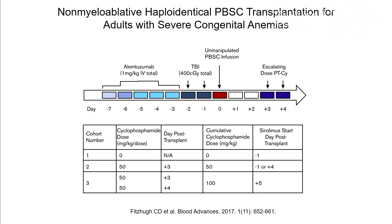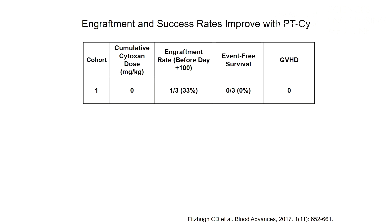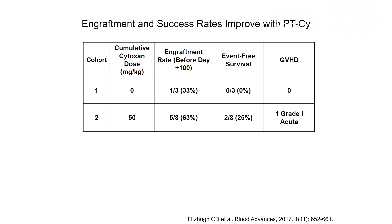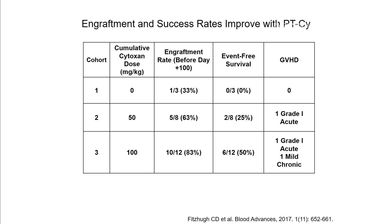We built stopping rules into the study: if too many patients either rejected their grafts or got graft-versus-host disease, we moved to the next level. The second cohort received one dose of post-transplant cyclophosphamide, and the third received two doses for a total of 100 mg/kg. In the first cohort of 3 patients, none remained free of sickle cell disease. In the second cohort of 8 patients, only 2 remained free of sickle cell disease. In the third cohort of 12 patients, 10 initially engrafted but only 6 remained free of sickle cell disease.